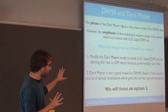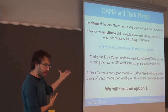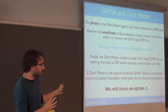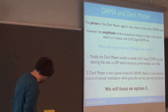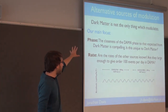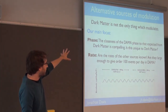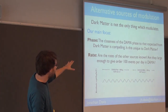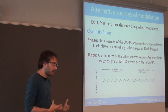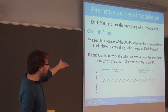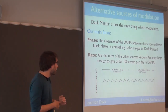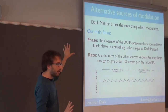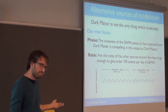What else can annually modulate, and can it really get the phase that dark matter gave us — because the phase was really close? The phase works, but the amplitude doesn't really work in the most basic model. So what if we look at other annually modulating signals? The main focus is the phase and the rate. The DAMA data phase is very close to the phase predicted from dark matter — can we reproduce that, or is it really a smoking-gun signal? Do we know the rates of other annually modulated sources? Can they be large enough to give the rate of DAMA, which is about 100 events per day?